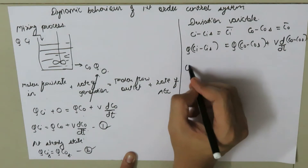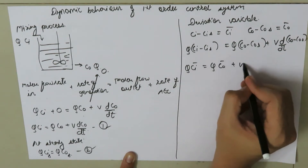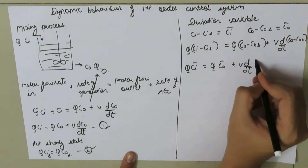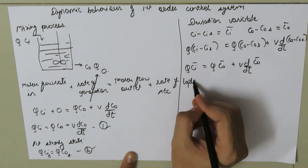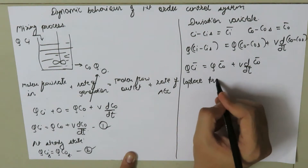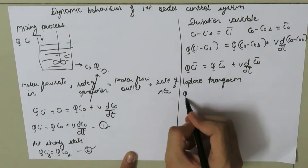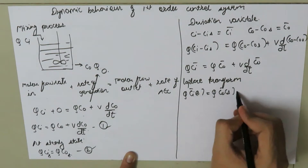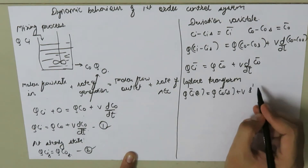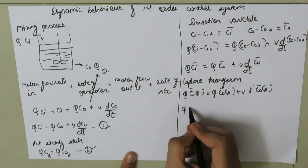This simplifies to Q times CI bar equals Q times CO bar plus V times d(CO bar)/dt. Now we take the Laplace transform on both sides of this equation, giving Q times CI bar(s) equals Q times CO bar(s) plus V times s times CO bar(s).